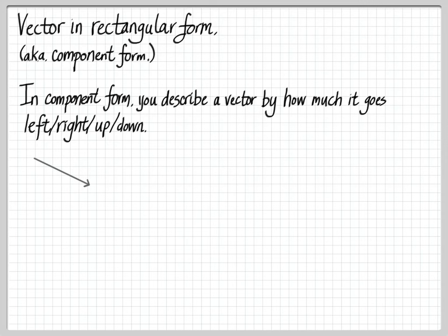So in component form, you describe a vector by saying how much it goes left or right, and then by saying how much it goes up or down. And it's very analogous with coordinates. So let me show you. Let's say I have this vector here, and I'm going to be referring to this background grid as sort of my coordinate system. So there I have this vector that I've drawn. It goes from here to here. And I want to write its component form, its rectangular form. So if I look at how much it goes left to right, the vector goes to the right this much.